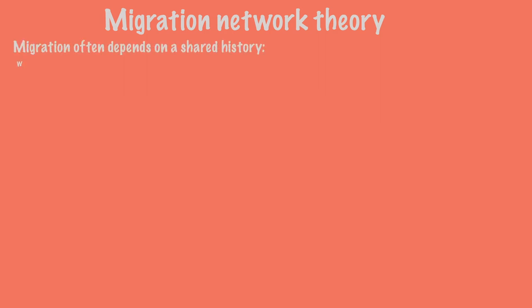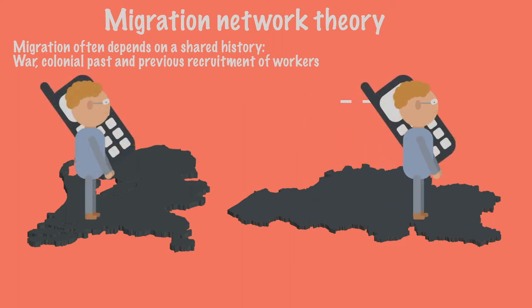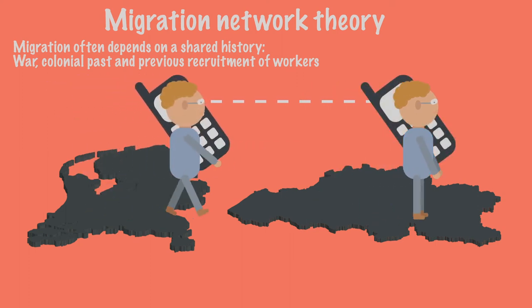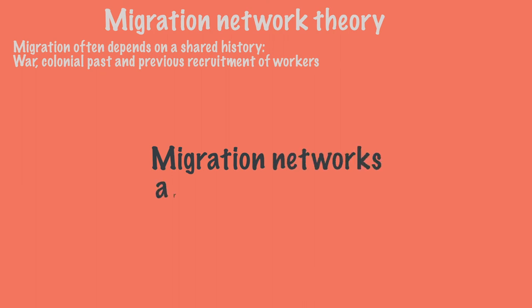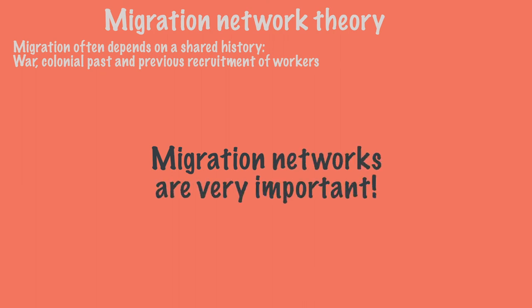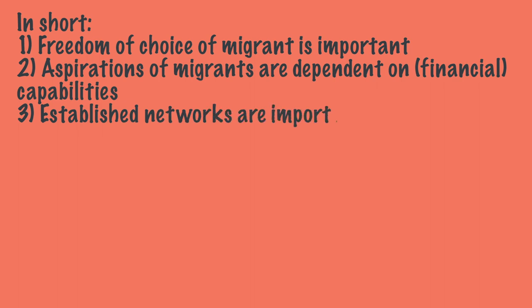A third point of criticism is that according to migration network theories, migration often depends on a shared history, which is not reflected in the push and pull factors model. Due to wars, the colonial past, and previous recruitment of workers, there may already be a network between two countries, or it may be easier to migrate from certain countries to another. Furthermore, previous groups of migrants may still have contact with potential migrants from the departure area, helping and informing them before the journey and after arrival, resulting in a remarkable amount of migration between just a few countries. In short, there are many other factors involved in migration than just push and pull factors, and therefore there are other theories that stress other drivers of migration. The following video explains a special form of migration: urbanization.